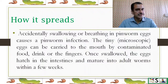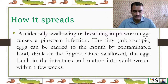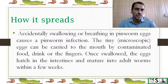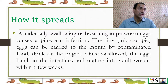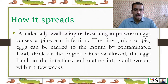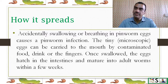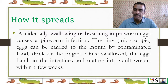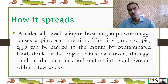How does it spread? By accidentally swallowing or breathing in pinworm eggs — they are very small and can sometimes spread through the air. The tiny microscopic eggs can be carried to the mouth by contaminated food, drink, and fingers. Once swallowed, the eggs hatch in the intestine and mature into adult worms within a few weeks.